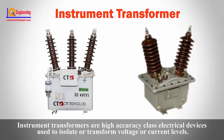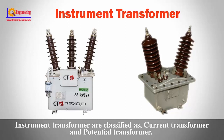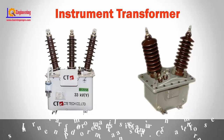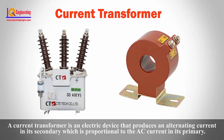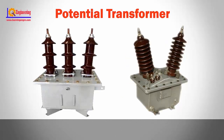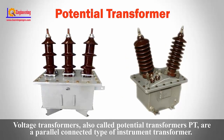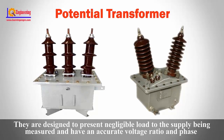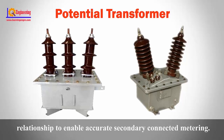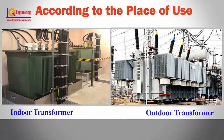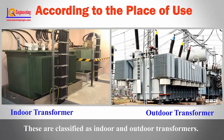Instrument transformers are high-accuracy class electrical devices used to isolate or transform voltage or current levels. They are classified as current transformer and potential transformer. A current transformer is an electrical device that produces an alternating current in its secondary which is proportional to the AC current in its primary. A potential transformer, or PT, also called a voltage transformer, is a parallel-connected type of instrument transformer designed to present negligible load to the supply being measured, with an accurate voltage ratio and phase relationship to enable accurate secondary-connected metering.